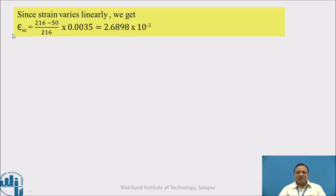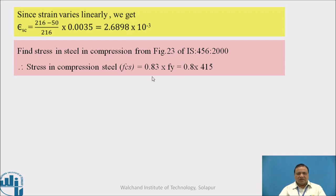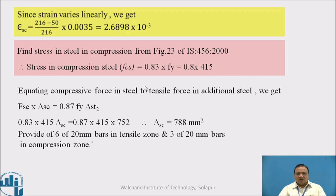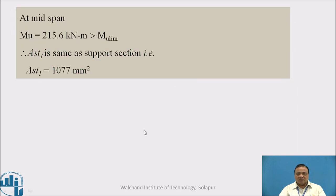Since strain varies linearly, epsilon SC equals (216 - 50)/216 × 0.0035. 0.0035 is maximum strain at the extreme fiber. By referring IS456 figure number 23 we can find the stress in compression steel. Equating compression force in steel to tensile force in additional steel, FSC × ASC equals 0.87 FY × AST2. From this we get ASC equals 788 mm square. Provide 6 bars of 20 mm in tensile zone and 3 bars of 20 mm in compression zone.